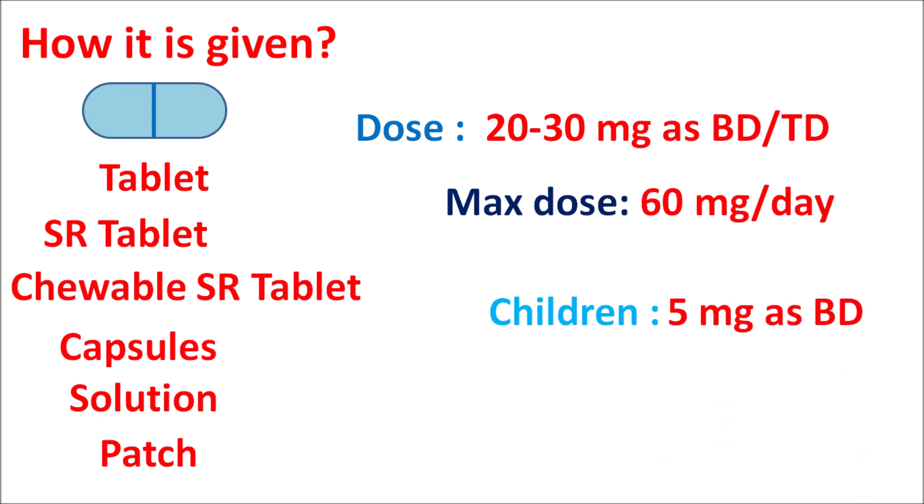In summary, methylphenidate is a CNS stimulant indicated for the treatment of ADHD — attention deficit hyperactivity disorder — as well as narcolepsy. This drug inhibits norepinephrine and dopamine transporters to improve symptoms in ADHD. However, it can produce cardiovascular effects such as tachycardia, palpitations, and risk of stroke, and CNS effects such as hallucinations, delusions, and manic phase. All these symptoms should be closely monitored when this drug is prescribed long-term. Hope you enjoyed this video — please subscribe, share, and leave your comments. Thank you for watching.